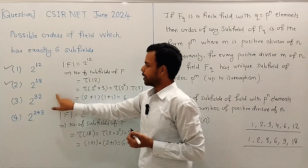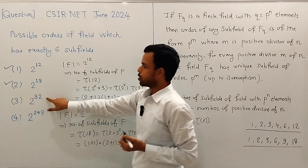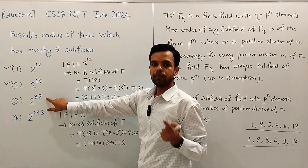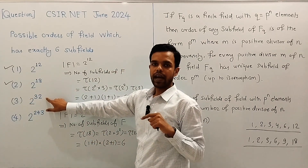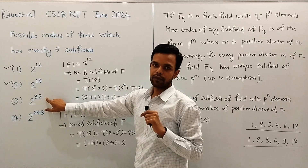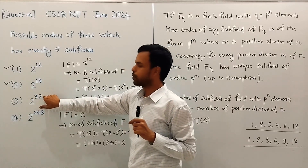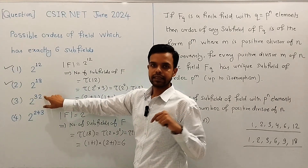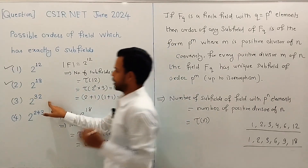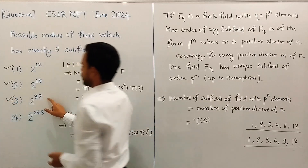Similarly, we can verify that a field of order 2^32 also has exactly 6 subfields, because tau(32) = 6. So this option is also a true statement.